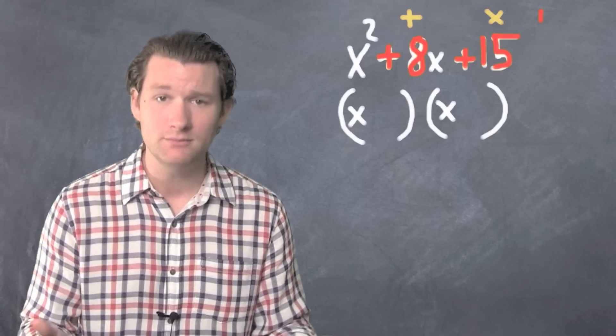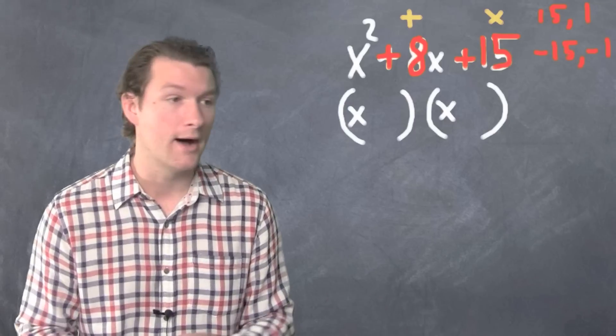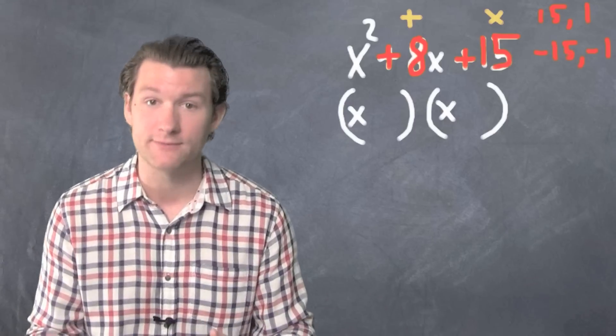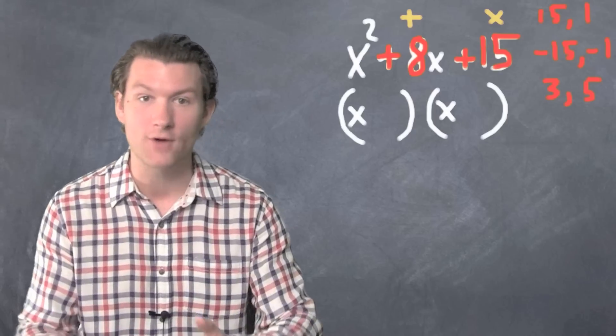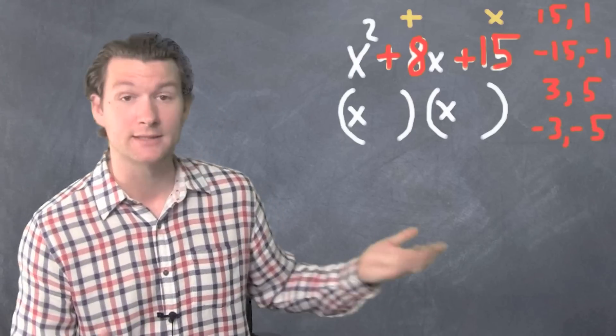We could have positive 15 and positive 1—they multiply to positive 15. Negative 15 and negative 1. Positive 3 and positive 5. Negative 3 and negative 5. All of these multiply to positive 15.